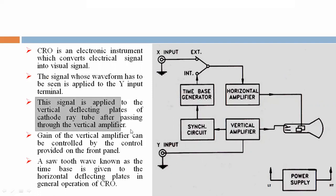This signal is applied to the vertical deflecting plates of the cathode ray tube after passing through the vertical amplifier. See here, this is the vertical amplifier. Now, gain of the vertical amplifier can be controlled by the control provided on the front panel.